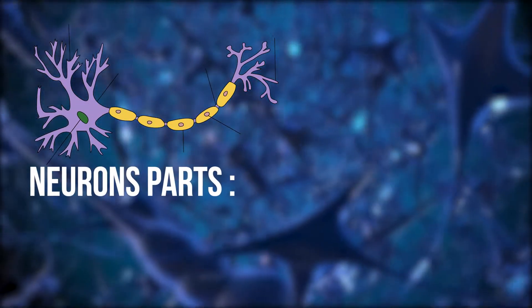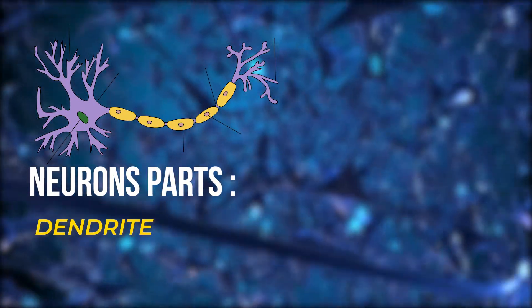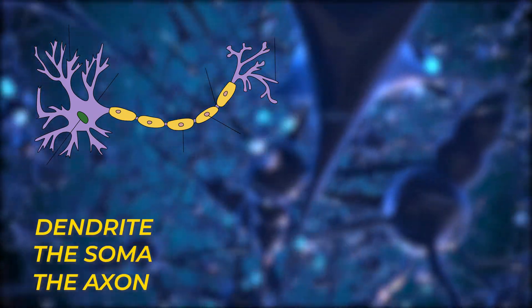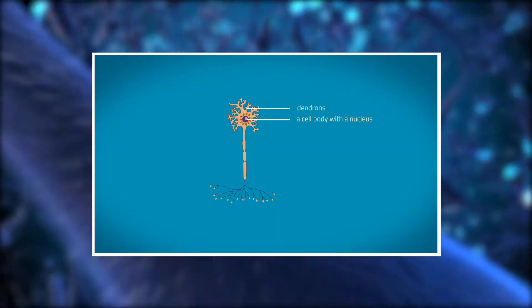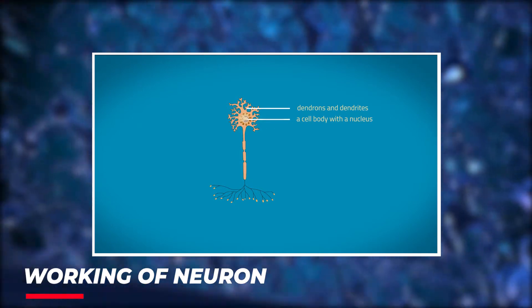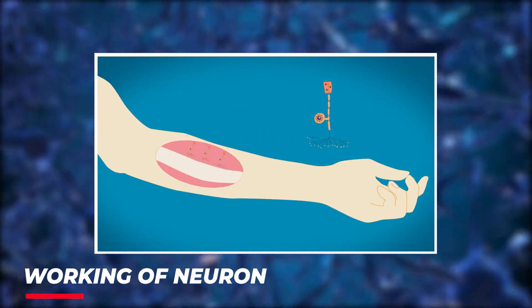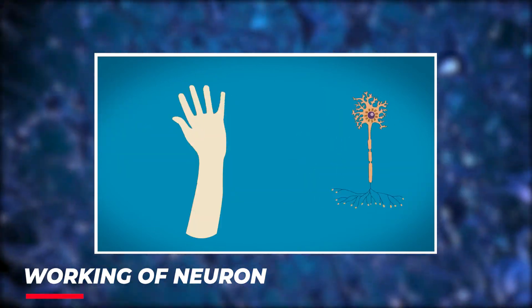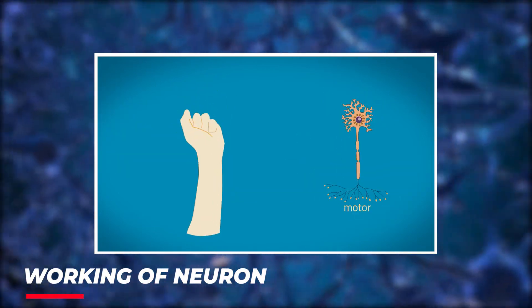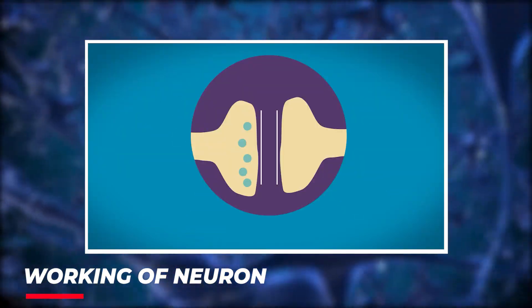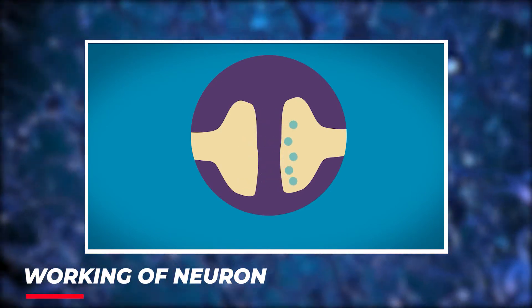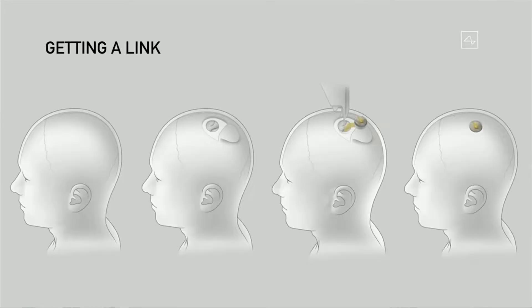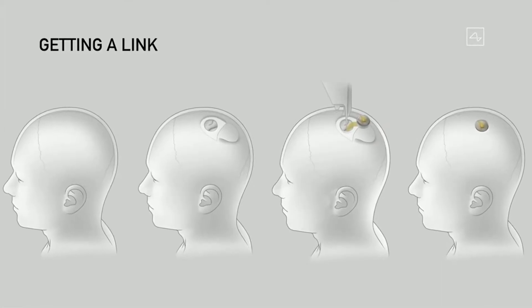Each neuron consists of three parts: the dendrite, the soma and the axon. Three of them have different functions and responsibilities. Dendrite receives the signals and passes them to soma. Soma processes them and the axon transmits these signals to the other cells. All the neurons are linked with each other by the synapses. The synapses release neurotransmitters, which are then another neuron cell that causes the flow of current across neurons.